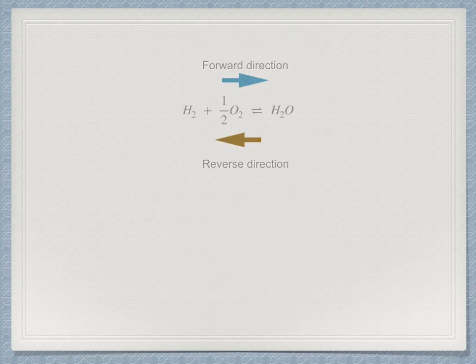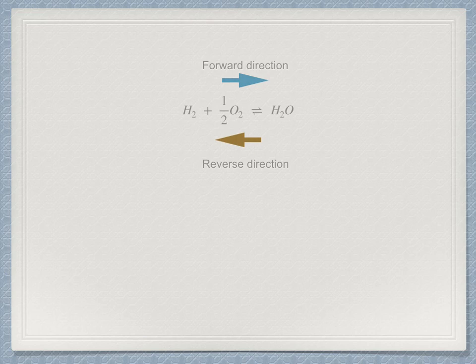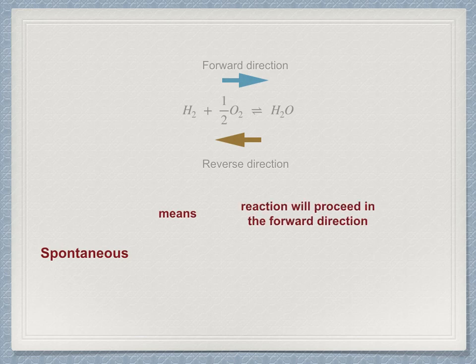Every chemical reaction equation has a forward and a reverse direction. In the forward direction, reactants turn into products, and vice versa in the reverse direction. We can choose to write down the equation in any manner, but once written down, the forward direction is defined based on how we chose to write it down. The word spontaneous is used in chemistry to mean the reaction proceeds in the forward direction as written.